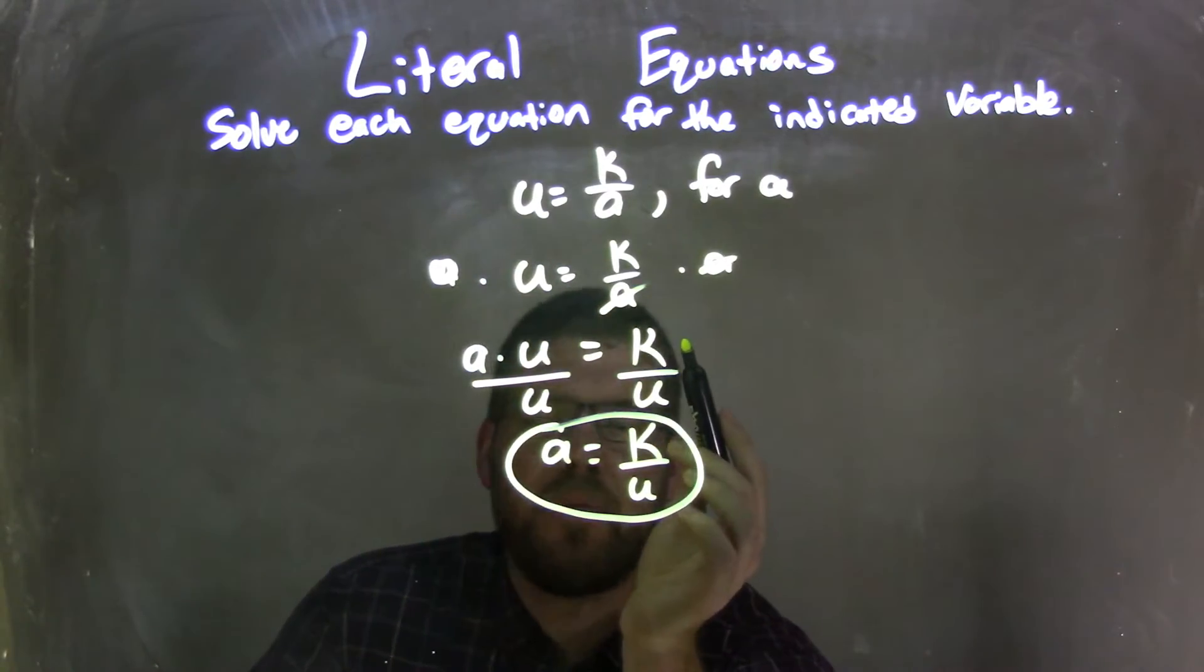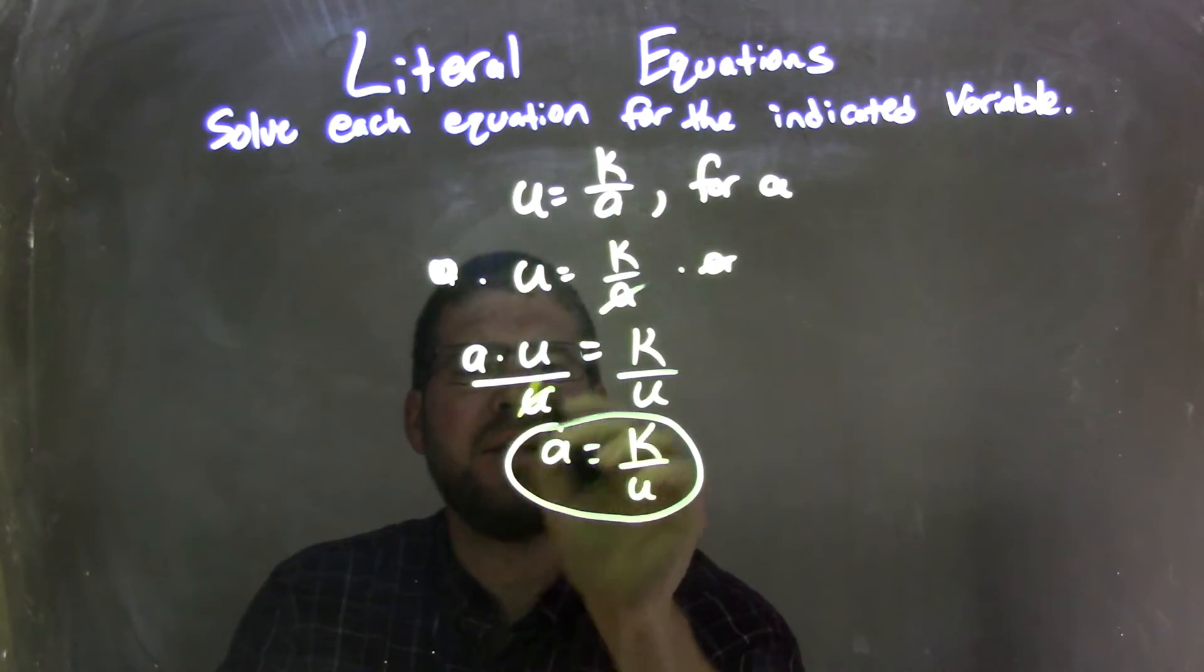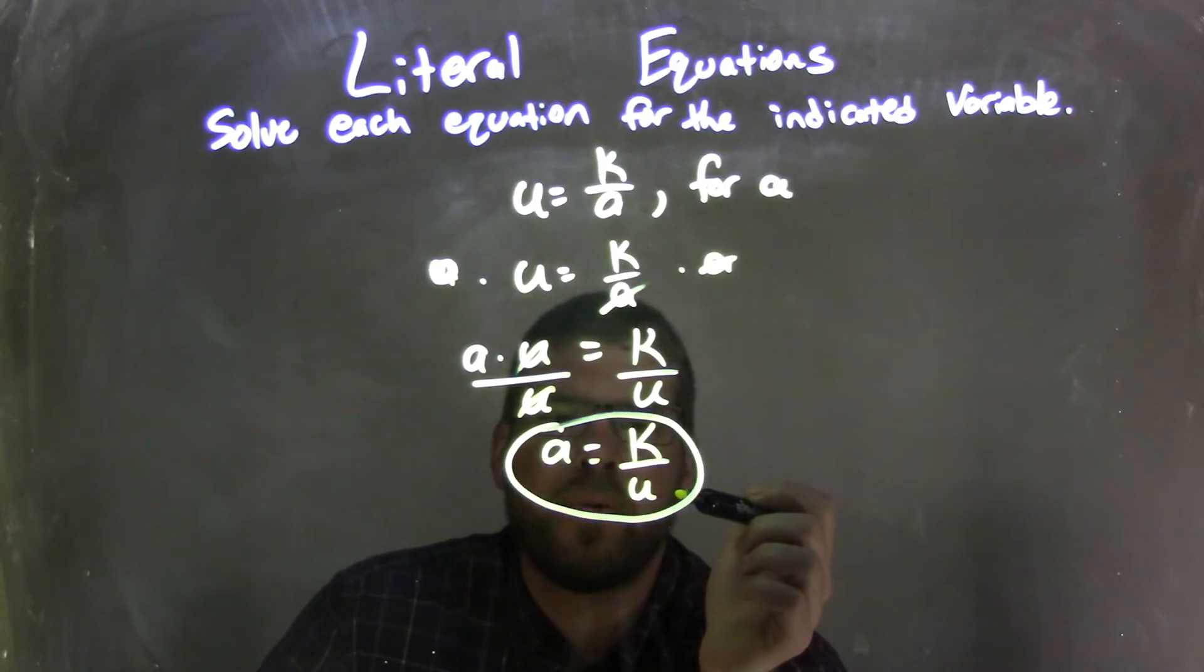k is isolated at that moment, but that's not what we're solving for. We're solving for a. So then I divided by u to both sides, because that was the opposite of that multiplication. And what that did was eliminate the u's on the left and leave me with an a on the left by itself, and that equals k over u on the right.